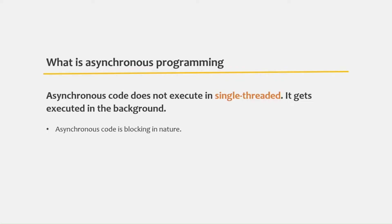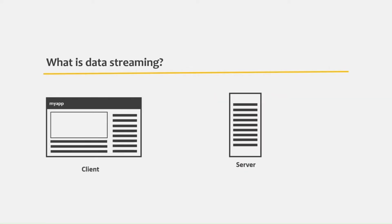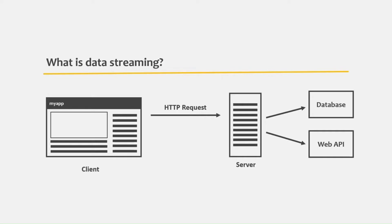Let's understand the difference between a promise and an observable. To understand the difference, we first need to understand what is streaming of data. Let's say we are creating an Angular application and want to make an HTTP request to the server. The server will get some data from the database or a web API, and this data might be huge. We want to send this data back to the client through an HTTP response.